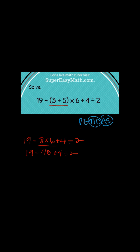Now I'm going to continue with my order of operations, which I've already been doing and I'm on the multiplication and division step and I can see that I have 4 divided by 2. So I have 19 minus 48 plus 2.